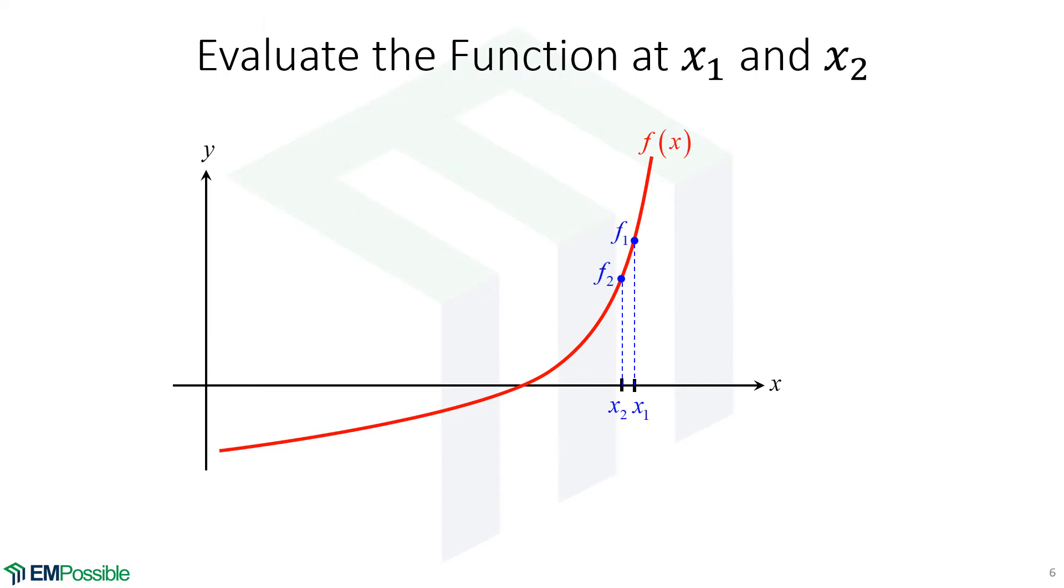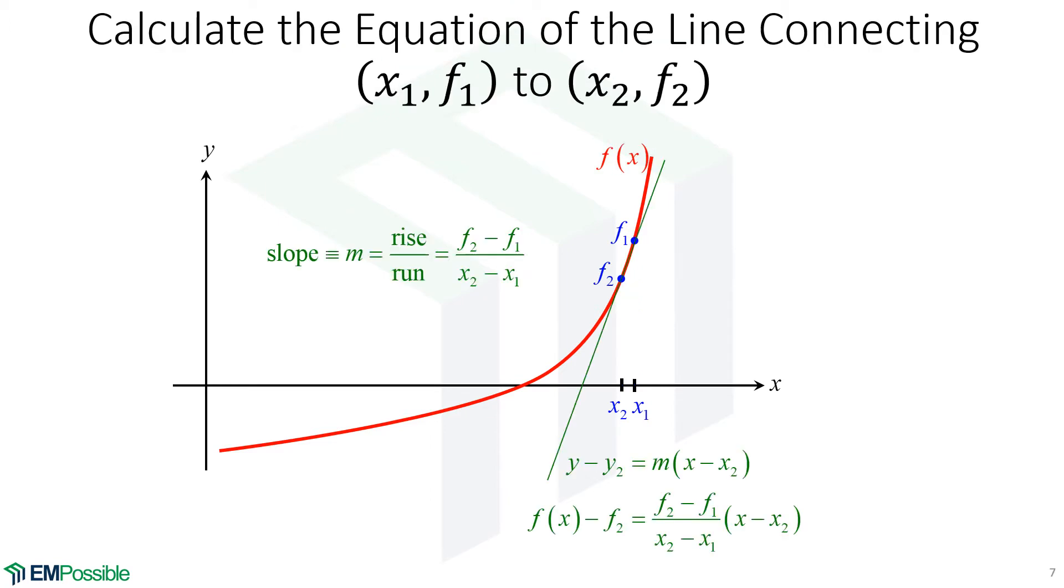We'll then evaluate the function at those two points. Given that information, we have two points. We can calculate a line and figure out where that line passes through the x-axis.